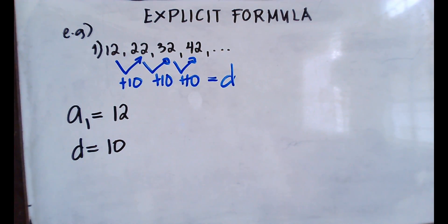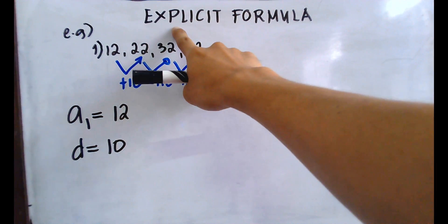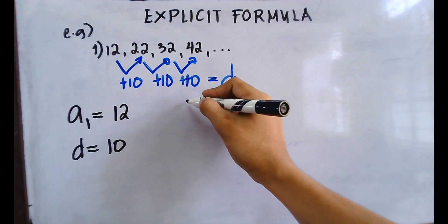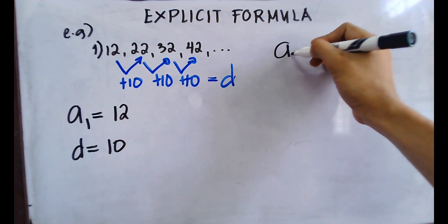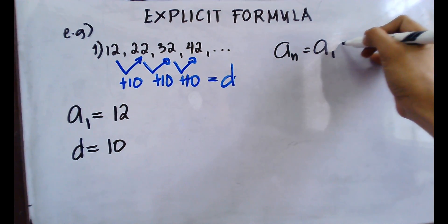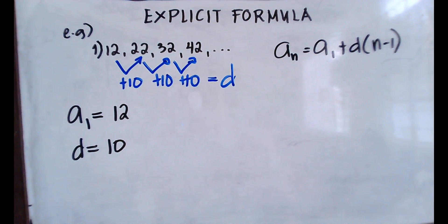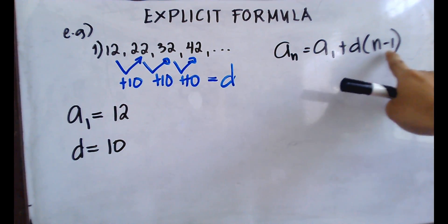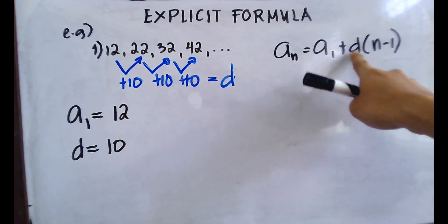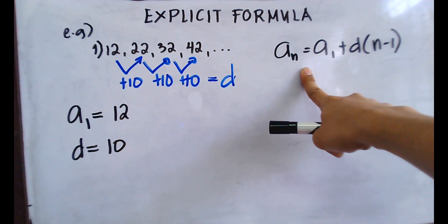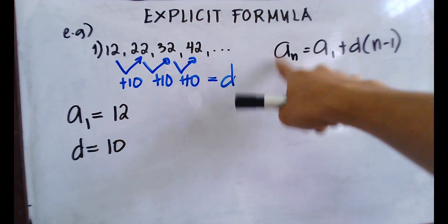If you already have the first term and the common difference of an arithmetic sequence, you can now find the explicit formula. Recall the arithmetic sequence formula: a sub n equals a sub 1 plus d times (n minus 1). Don't worry if n minus 1 comes before d, because they are interchangeable.